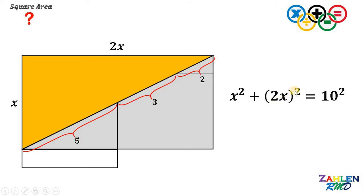Let's simplify. 2x quantity squared will give us 4x squared. On the right-hand side, we have 10 squared or simply 100. x squared plus 4x squared will give us 5x squared.